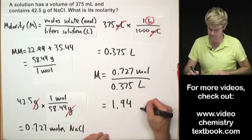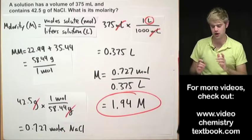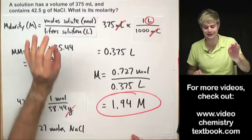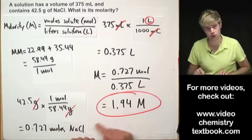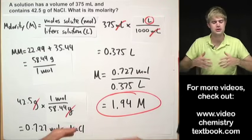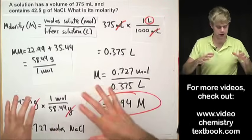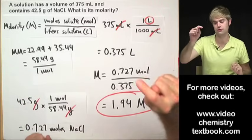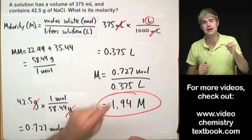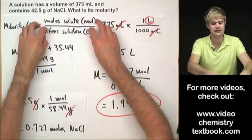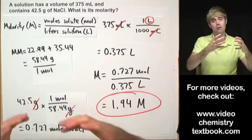1.94 molar — don't forget what this really means: for every liter of this solution there are 1.94 moles of NaCl. Sometimes you won't be given moles or liters directly, and you'll have to convert from grams to moles or from milliliters to liters. Make sure your conversion factors are set up correctly. In the next video, you'll be given molarity and use it as a conversion factor to move between moles and liters of a solution.